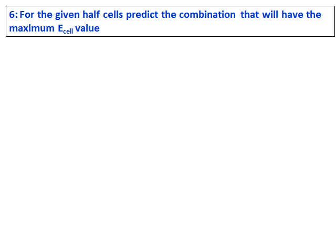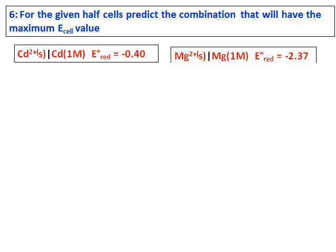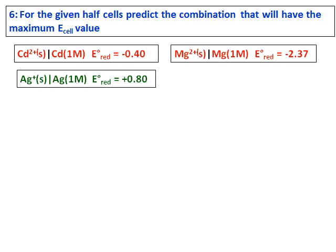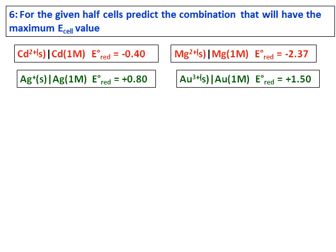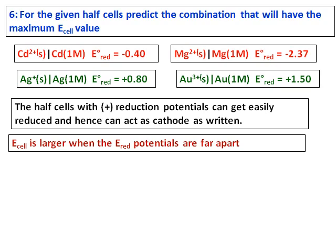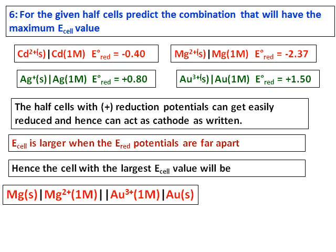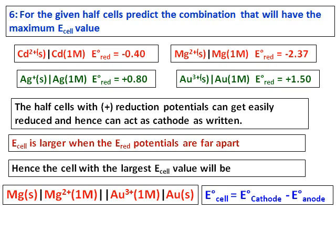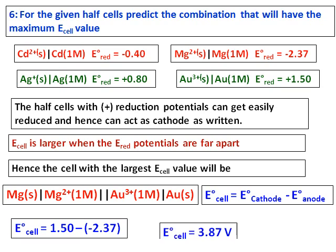For the given half cells, predict the combination that will have the maximum cell value. You are given four cells — the first two are negative and the second two are positive. The half cell with the most positive reduction potential will act as cathode, so we choose Au with the largest positive value as the cathode. For the largest E cell, the reduction potentials should be far apart, so the combination of gold as cathode and magnesium as anode gives the largest E cell value of 3.87 V. Try other combinations and you will find lower values.